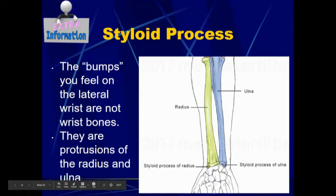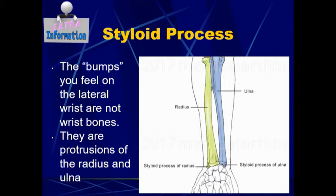This is not in your notes packet, but it is interesting information. When you feel your wrist and feel those bumps on the side — both a lateral and a medial bump — those are not your wrist bones. Those are actually called the styloid process of the radius and the styloid process of the ulna. So those are parts of the forearm bones and you are feeling the protrusion of the ends of those bones.